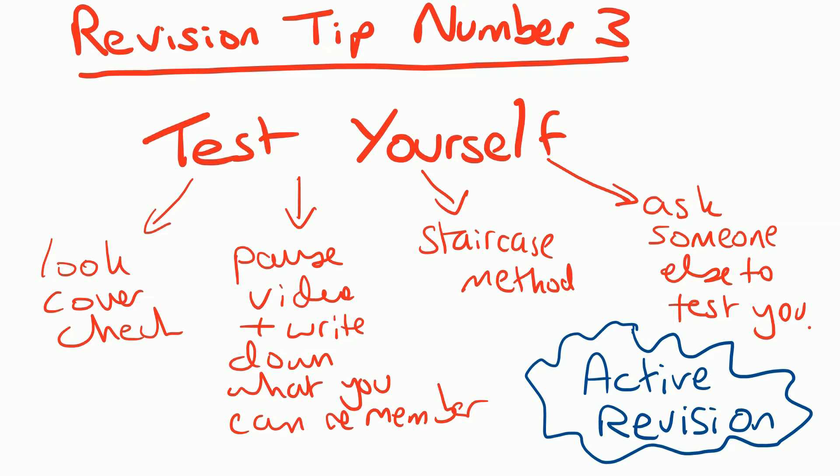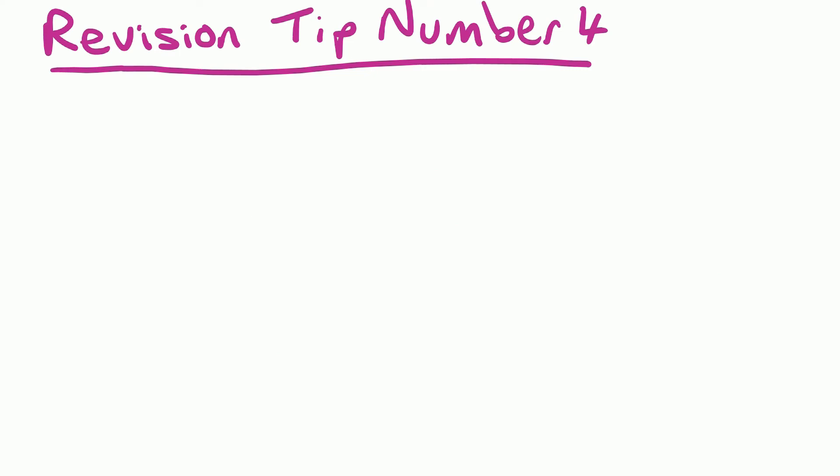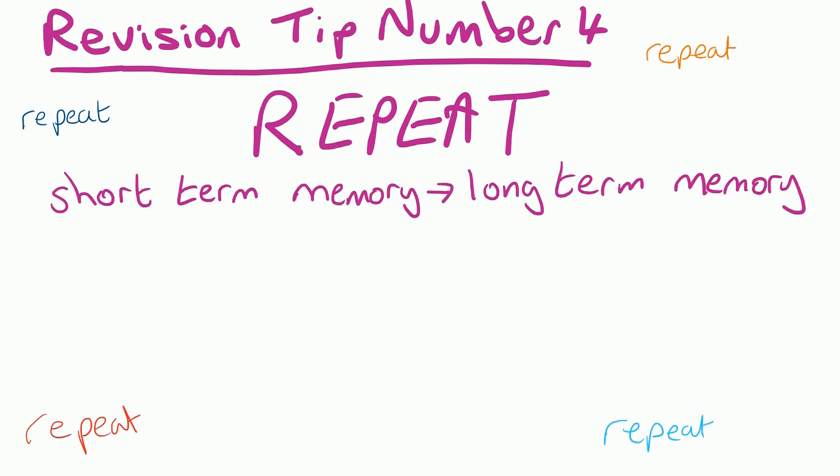Revision tip number four - this is a really, really important one - and that is repeat your revision. So what this does is the information you've learned goes from your short-term memory into your long-term memory. So instead of feeling like you're having to drag it up from your memory, it becomes something that you know. So review your work once a week. By doing that it's starting to go into your memory.